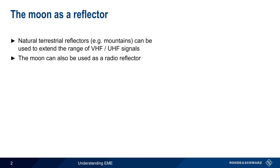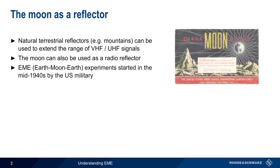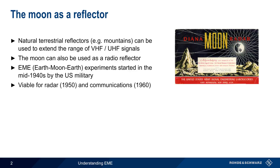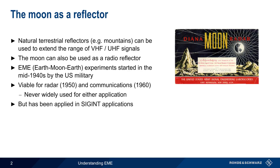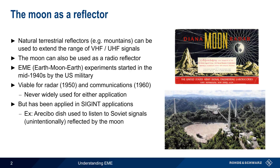The first experiments into EME, or moon bounce, were started by the United States military in the 1940s. By the 1950s and 1960s, EME was shown to be viable for use in both radar and communications. Although EME was never widely adopted for these applications, it was successfully used for many years in SIGINT, or signals intelligence applications. For example, the Arecibo dish in Puerto Rico was used during the Cold War to monitor Soviet signals that were unintentionally reflected back to Earth by the moon. In modern times, EME propagation is primarily used by radio amateurs.